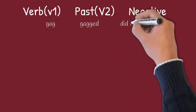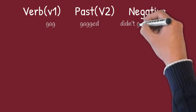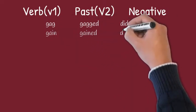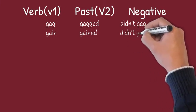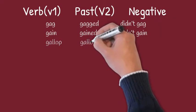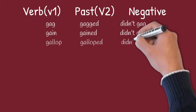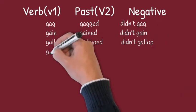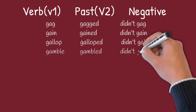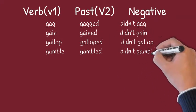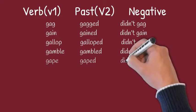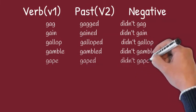Gag, gagged, didn't gag. Gain, gained, didn't gain. Gallop, galloped, didn't gallop. Gamble, gambled, didn't gamble. Gape, gaped, didn't gape.